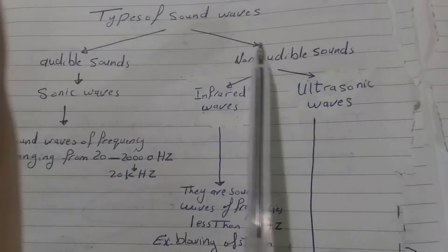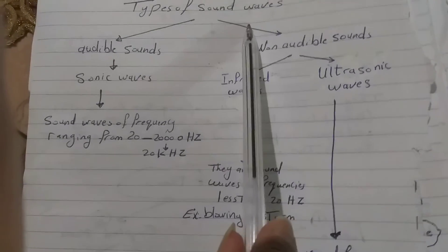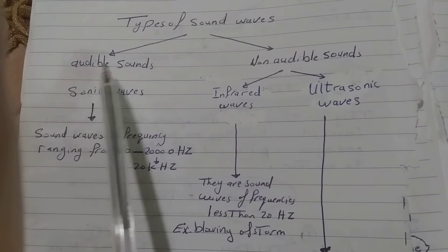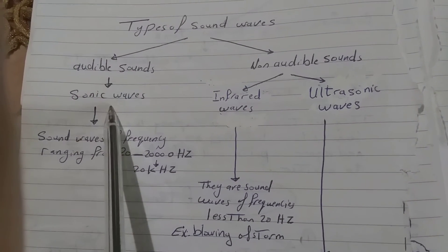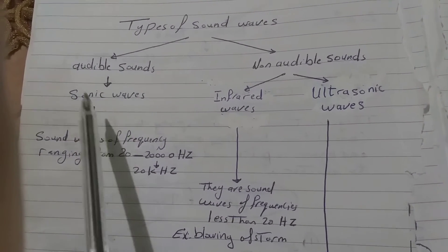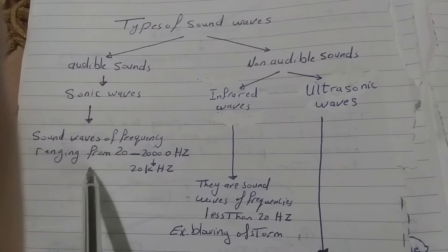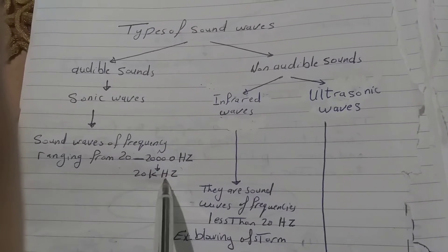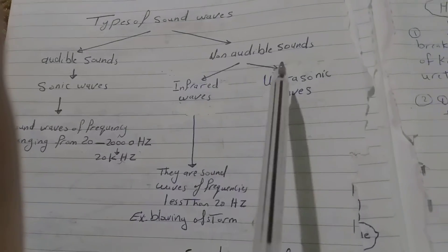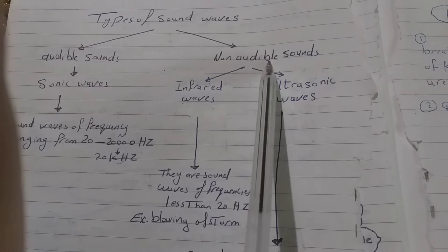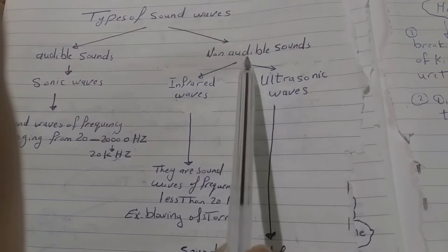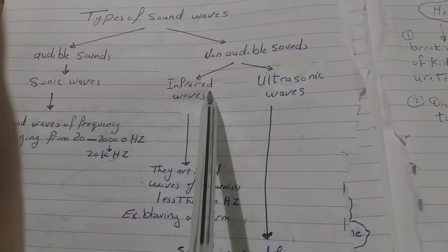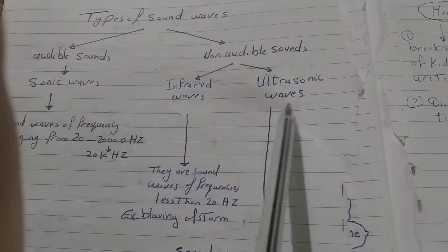What are the types of sound waves? There are sounds we can hear, called audible sounds or sonic sounds, with a wave frequency range from 20 to 20,000 hertz (20 kilohertz). There are also sounds we cannot hear, called non-audible sounds, which are of two types: infrasonic waves and ultrasonic waves.